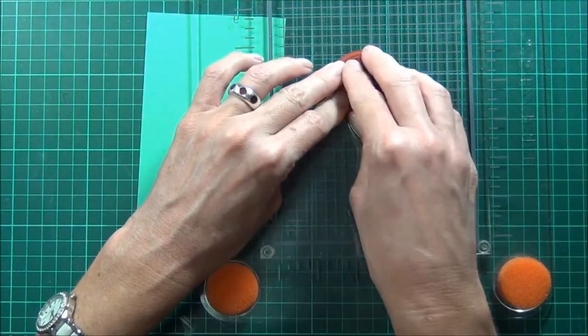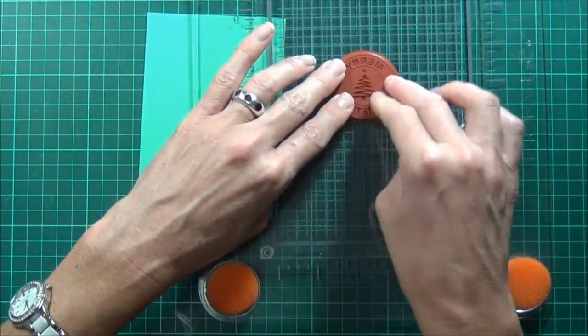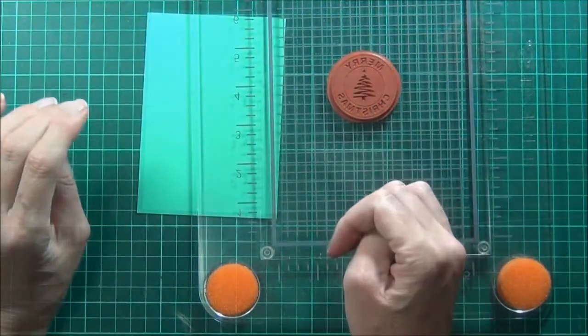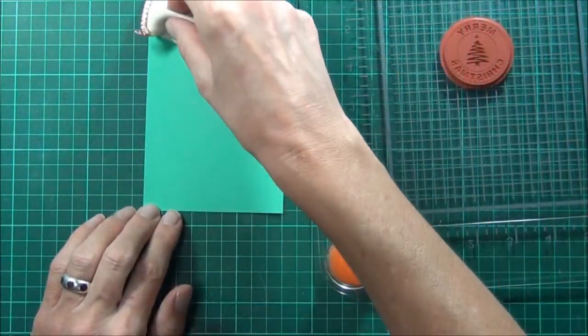I'm just making sure that it's nice and straight on the grid lines because I want to do some repeated stamping over this teal colored panel.